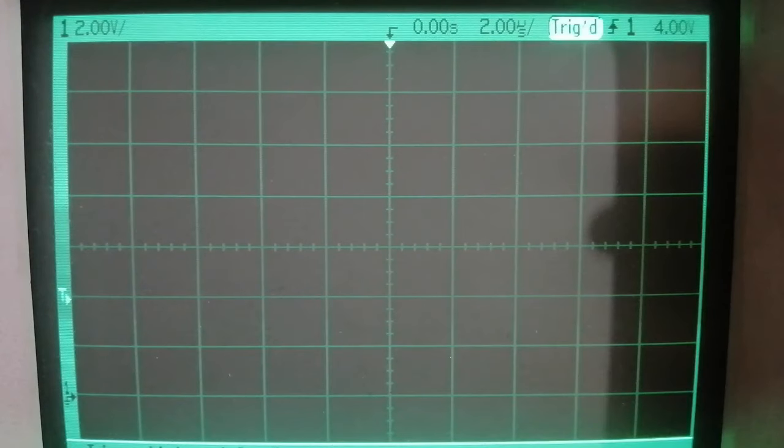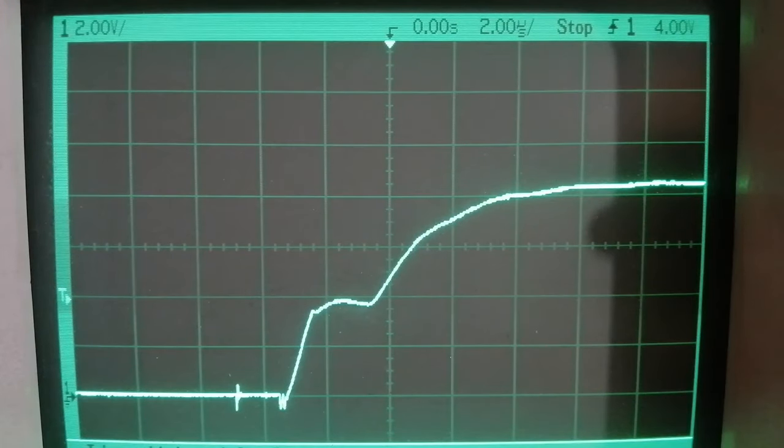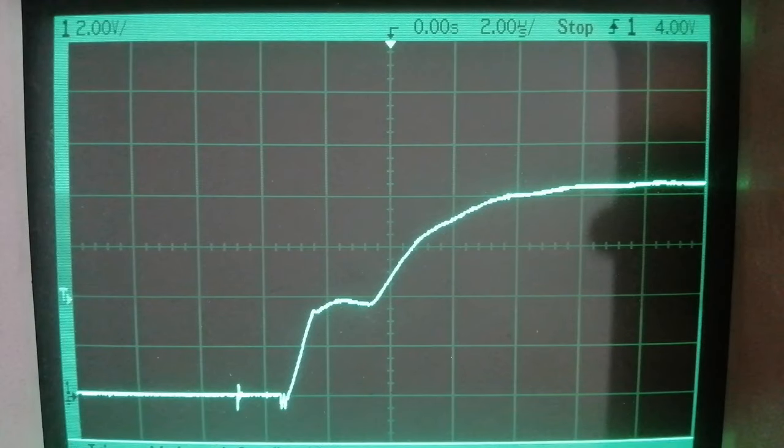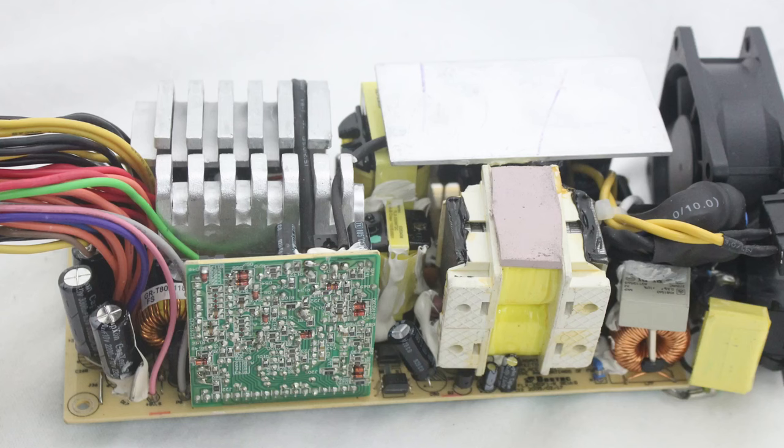Now instead, let's probe the gate source voltage and see how that behaves. We can see that it rises pretty slowly. It takes about 6 microseconds for it to go up completely. Now some of you might be saying that 6 microseconds is incredibly fast, and that's true in general,